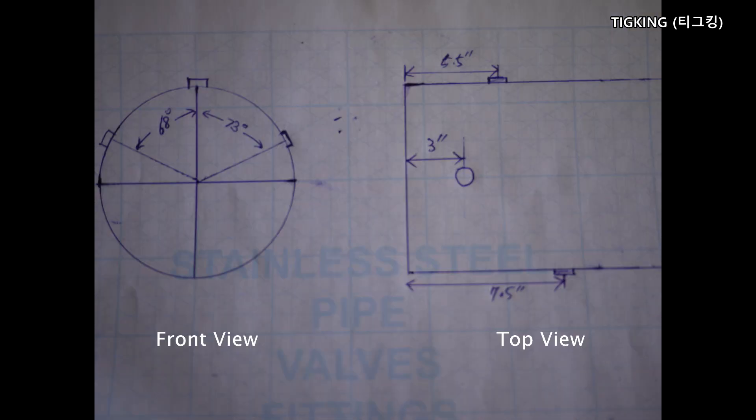I have to add three weldlets on the pipe. One is on the top and three inches apart from the pipe end. Second one is 73 degrees apart from the top and seven and a half apart from the pipe end. The last one is 68 degrees apart from the top and five and a half apart from the pipe end.